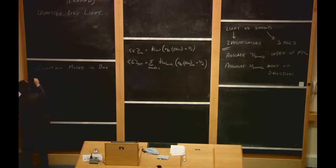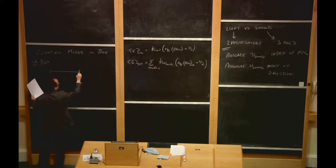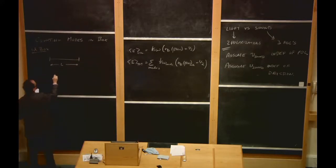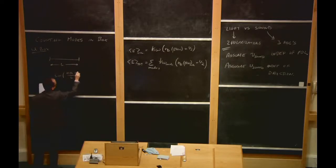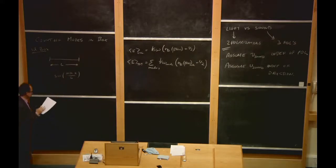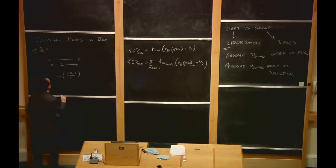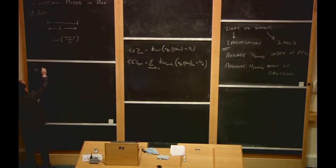Starting with a one-dimensional box of length L, we can write a wave with hard wall boundary conditions as sin(nπx/L), which goes to zero at both ends for every positive integer n. But instead, we're going to use periodic boundary conditions.